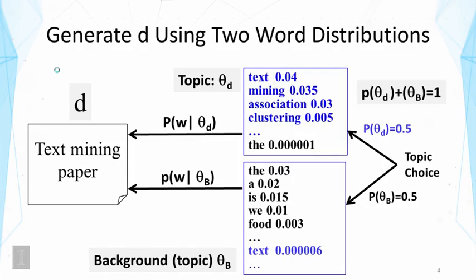In order to get rid of them, we have to say that this distribution doesn't have to explain all the words in the text data — these common words should not be explained by this distribution. One natural way to solve the problem is to use another distribution to account for just these common words. This way, the two distributions can be mixed together to generate the text data, and we let the background topic model generate the common words, so our target topic theta will only generate the content words that characterize the document.